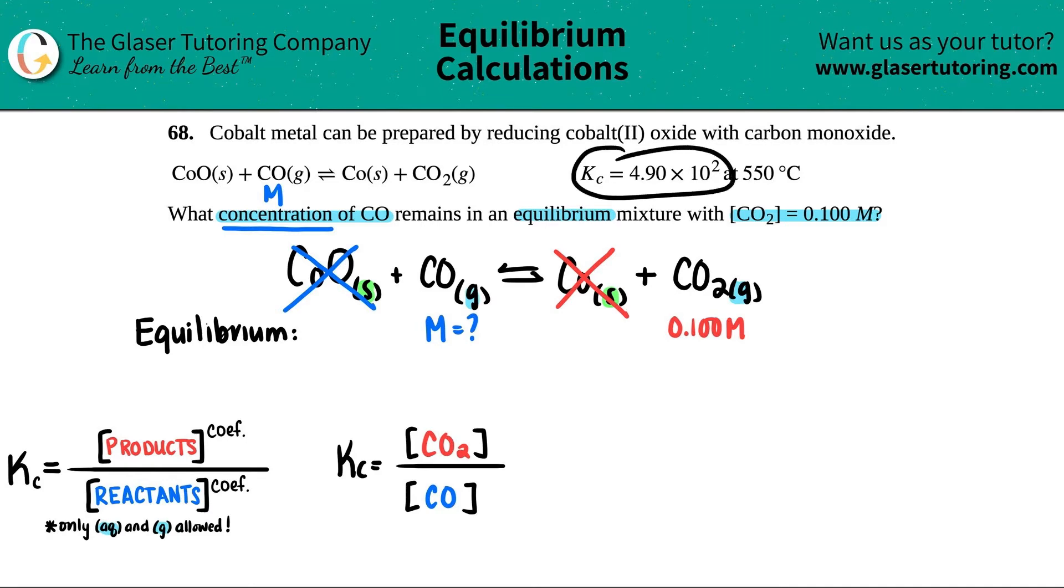Now let's just plug in what we know. They did give us a Kc number, so 4.90 times 10 to the second. And they gave me a CO2 concentration, so that's 0.100. We're looking for the molarity of CO, so that's an x. Let's just plug it in.